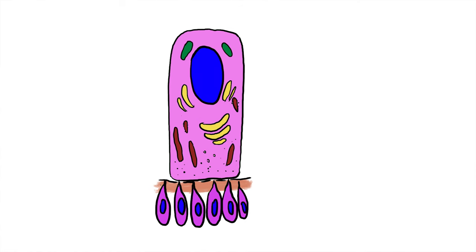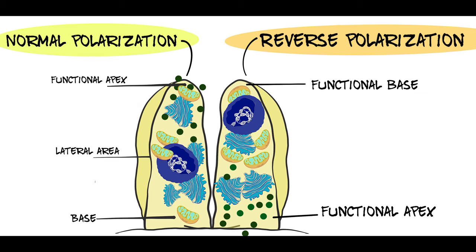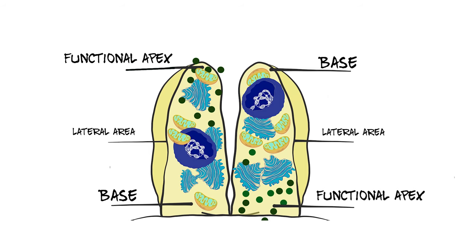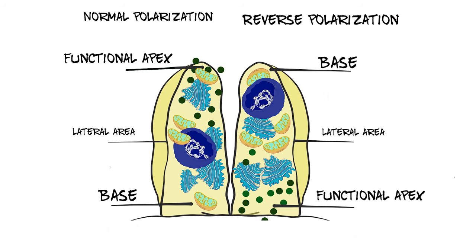To understand reverse polarization, let us look at amelogenesis. During the organizing stage of the life cycle of ameloblasts, the nucleus shifts towards the proximal end — that is, towards the cell's functional apex — and the protein-synthesizing apparatus, mainly the Golgi complex, shifts towards the basal end. This change in poles is termed reverse polarization: the functional apex becomes the base, and the basal domain becomes the functional apex.